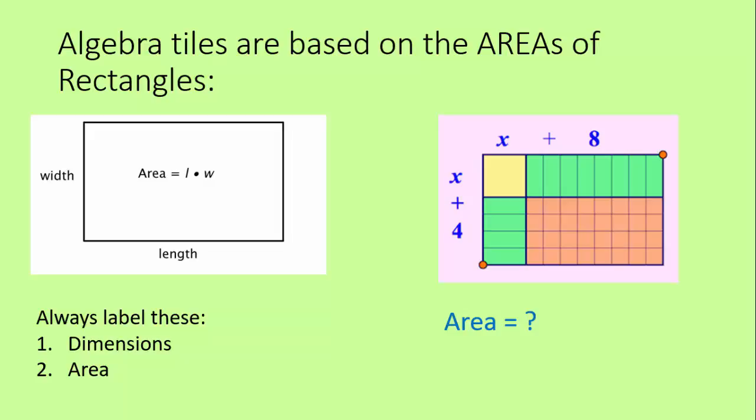The dimensions are going to be the factors of a quadratic most of the time, and the area is the product of those factors. That's the actual quadratic. Now when we use algebra tiles like this green, red, and yellow figure to the right, the dimensions are going to look something like this. We have a variable expression and a variable expression, often binomials like that. But what's the area going to be? Well it's really just the sum of all those parts.